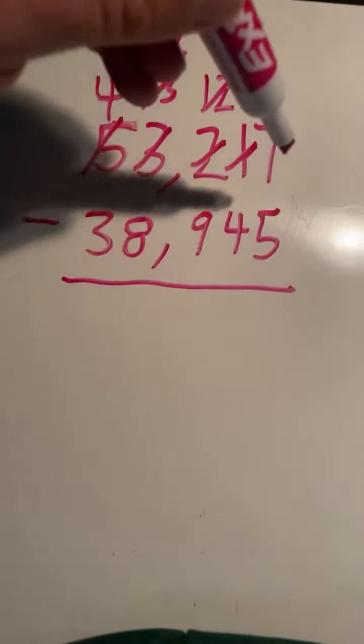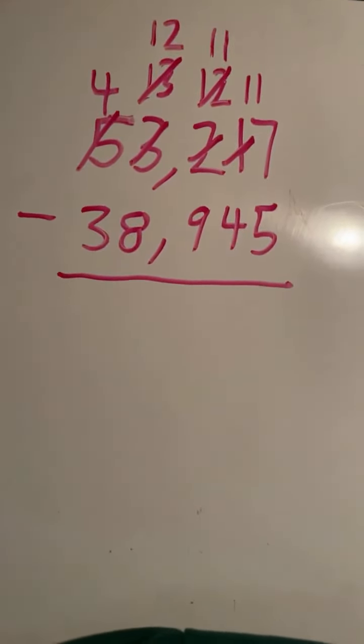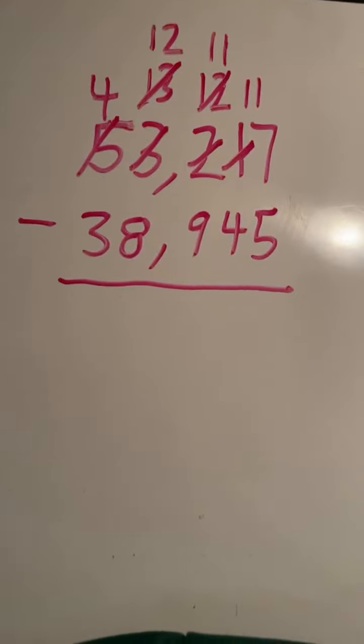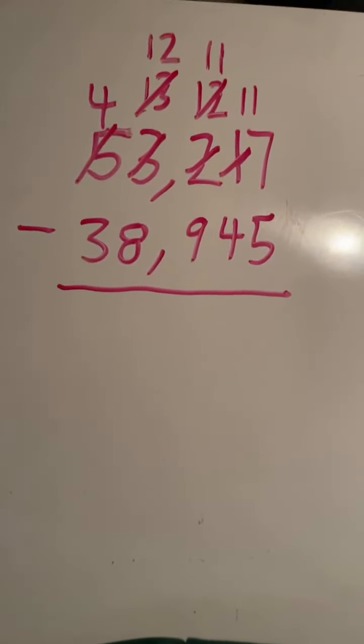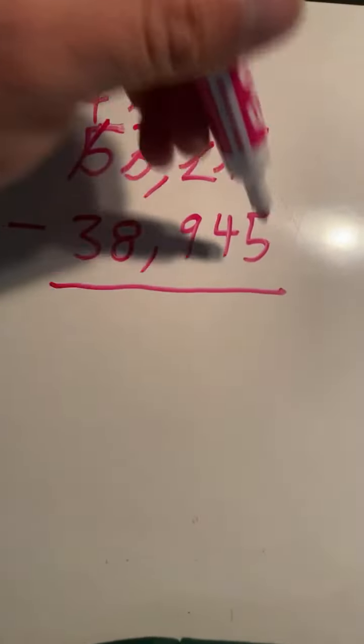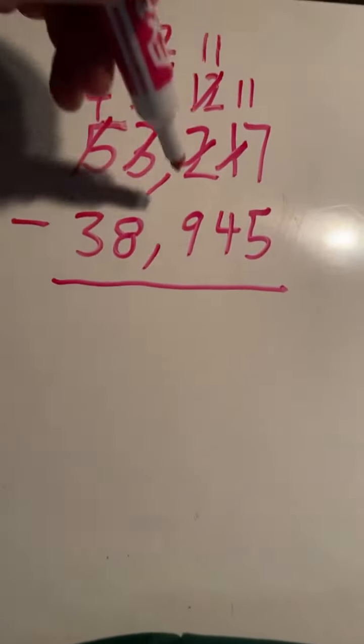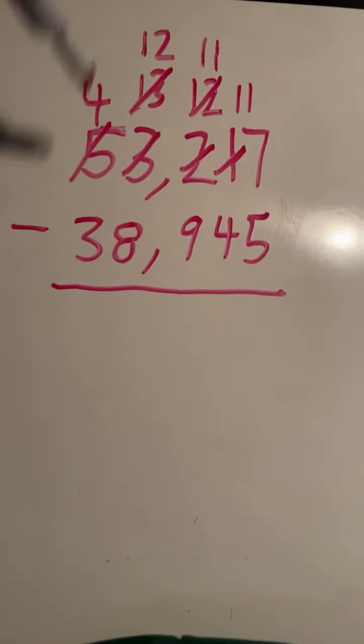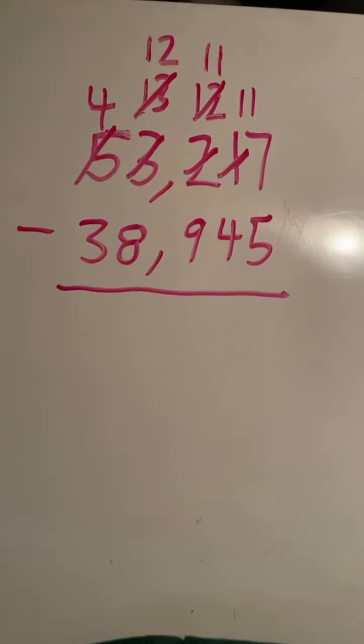The ones place, 7 is bigger than 5. That is fine. So double checking, making sure the top digits are equal to or bigger than the bottom digits. 7 is greater than 5, 11 is greater than 4, 11 is greater than 9, 12 is greater than 8, 4 is greater than 3. We are ready to subtract.